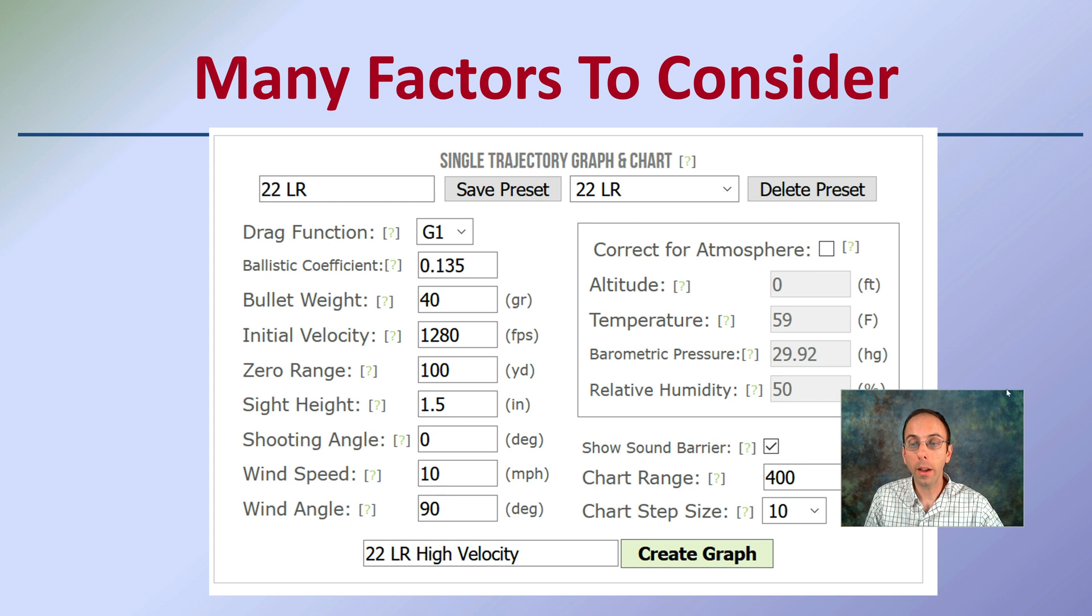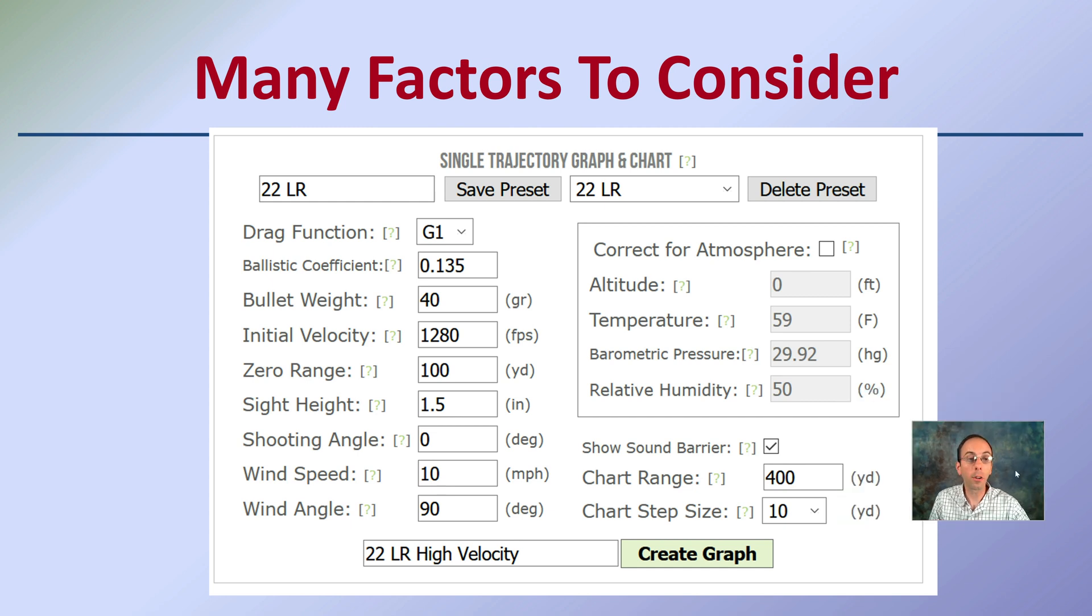First off, when I say there's many factors, here's just an example of some factors that can be taken into consideration. This is an online mathematical graph generator that will calculate some of these. You want to be thinking about the drag function, the weight of the bullet, the velocity, the shooting angle, the wind speed, the wind angle, as well as the weather, the altitude, the temperature, barometric pressure, relative humidity - all these can impact the trajectory of that bullet.